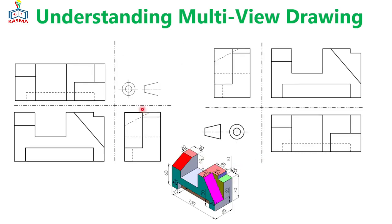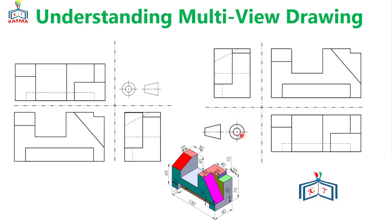In third angle projection, if the front view is here, the top view will be on the top of the front view, and the right side view will be placed on the right of the front view. If you compare the views relative to the first angle projection, the views are the same — except their position relative to the front view.